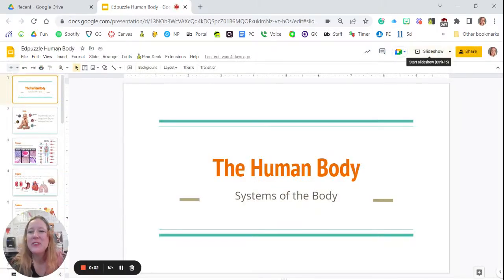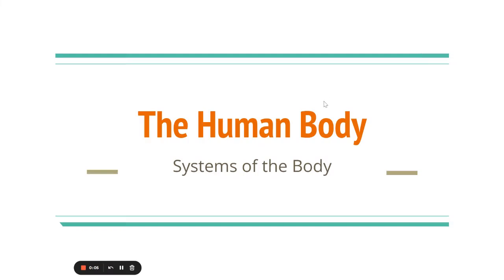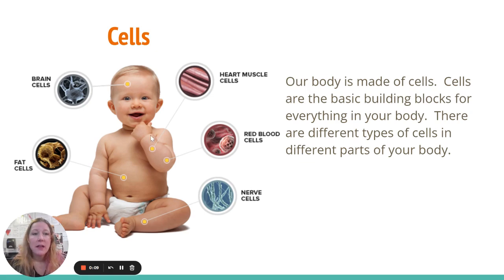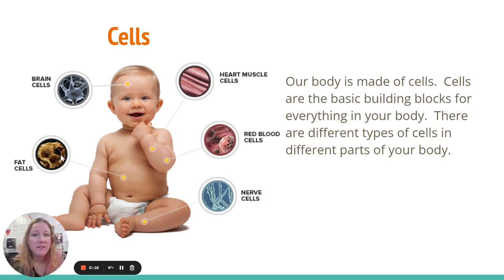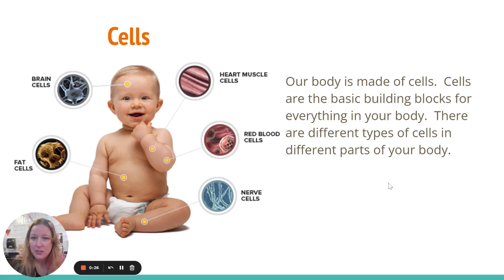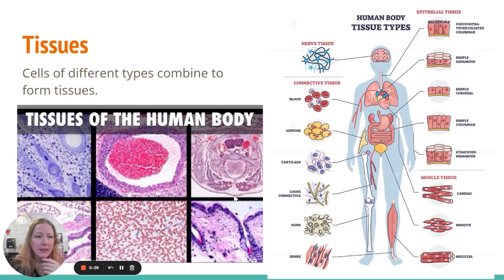Today I'm going to talk to you about human body systems and the way that they interact with each other. Let's start with the basics: everybody's got cells. All living things have cells — it's part of being living. There are different types of cells: brain cells, fat cells, heart cells, red blood cells, nerves. Our bodies are made of these cells; they're the building block for everything.